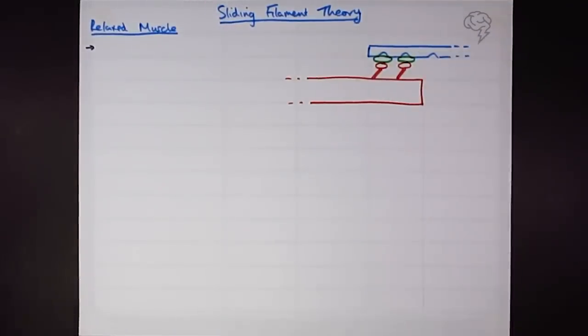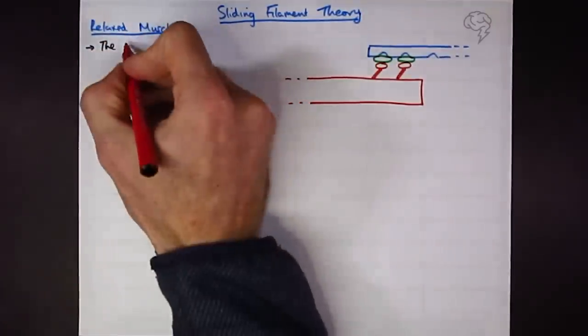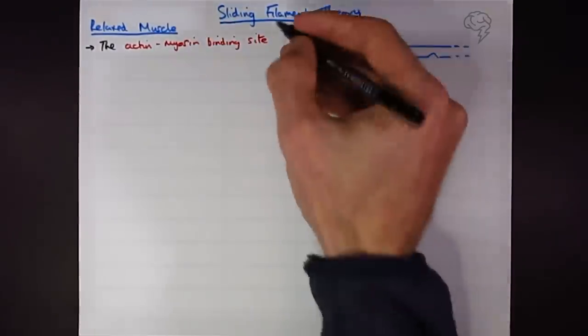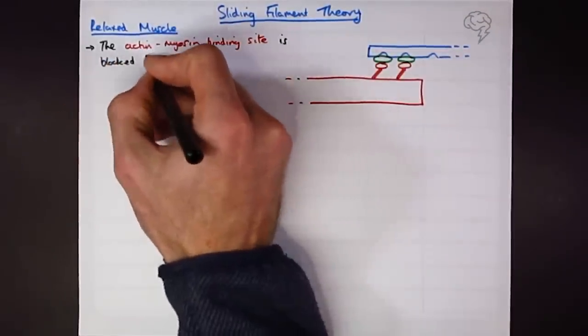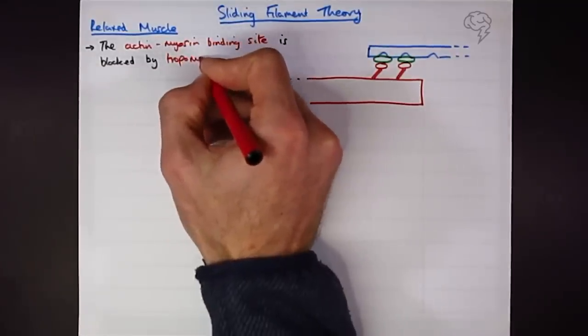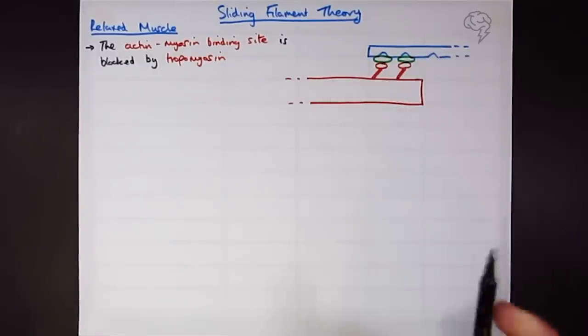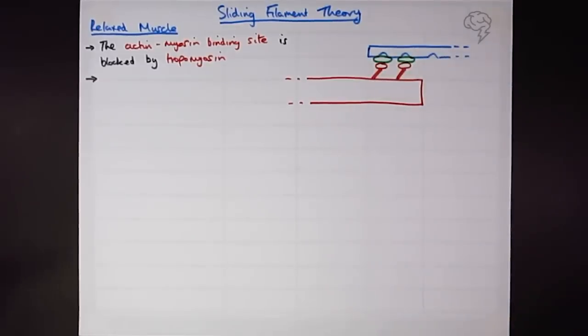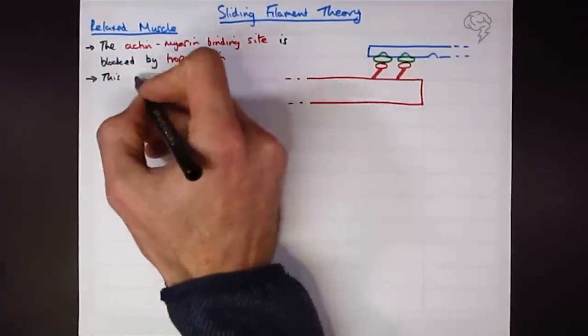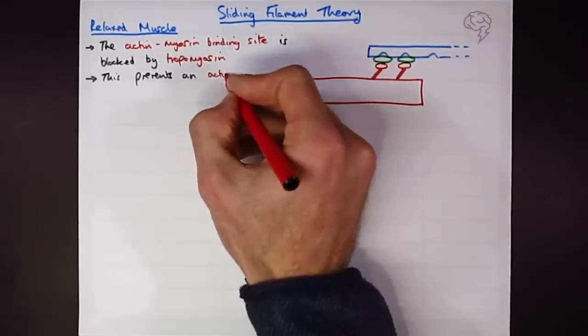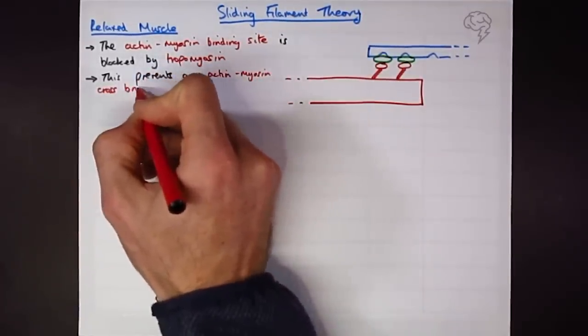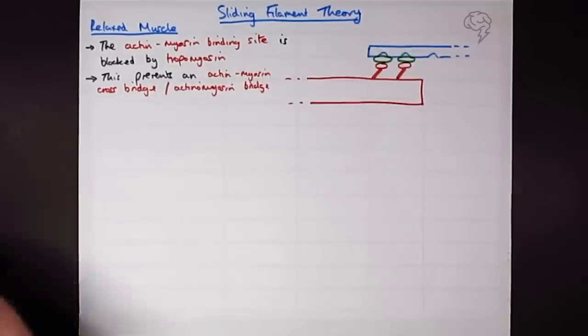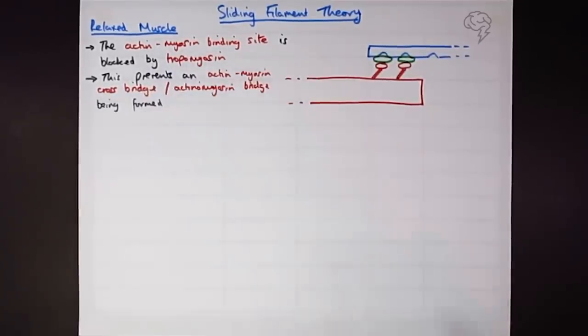We're going to put some notes down about these now. So this socket is called the actin myosin binding site. We can say is blocked by this green thing, which is tropomyosin. It's a protein. They're not going to ask you too much about it apart from its role, which is blocking the binding site. So when the myosin head is in the binding site, we can call that an actin myosin cross bridge. AQA this year are calling it an actinomyosin bridge. Same thing. If you're AQA, they want actinomyosin bridge.